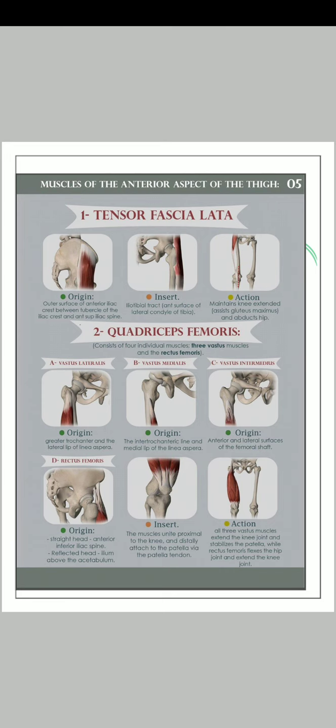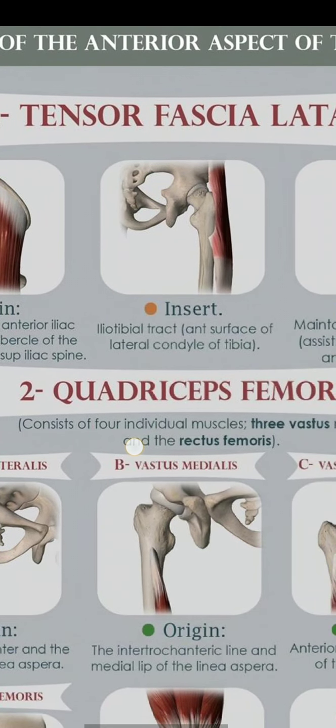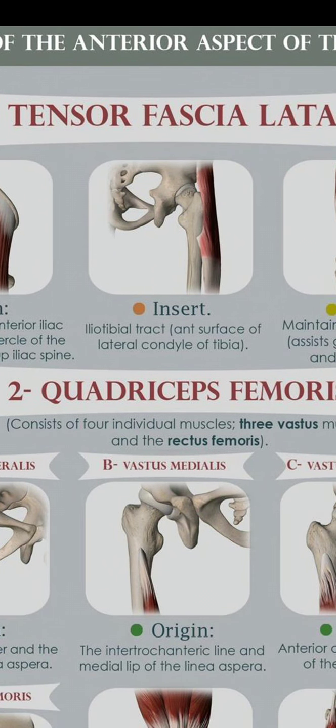Your first muscle is Tensor Fascia Lata. Its origin is from the outer surface of the anterior iliac crest, between the tubercle of the iliac crest and the anterior superior iliac spine (ASIS). You can see this in the diagram. Then comes the insertion, which is into the iliotibial tract.